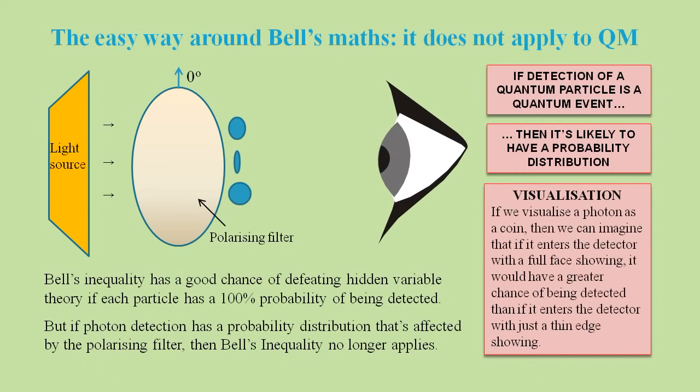If we visualize photons as small coins, then it's easy to imagine how its probability of being detected could be altered. Coins that approach the detector with a full face showing are more likely to be detected than those with just a thin edge showing.